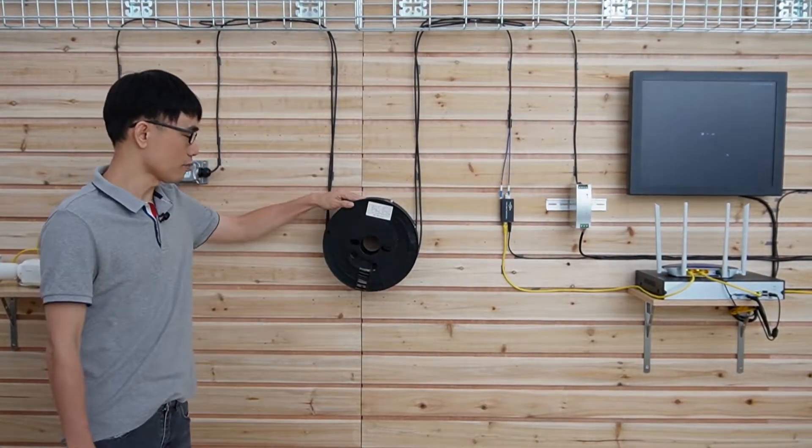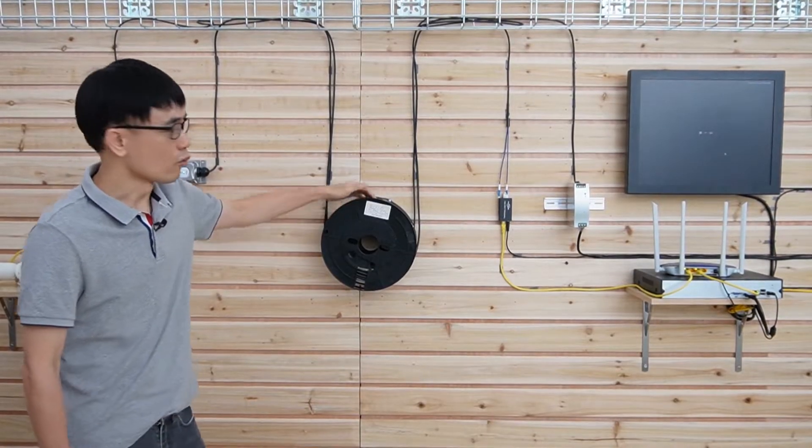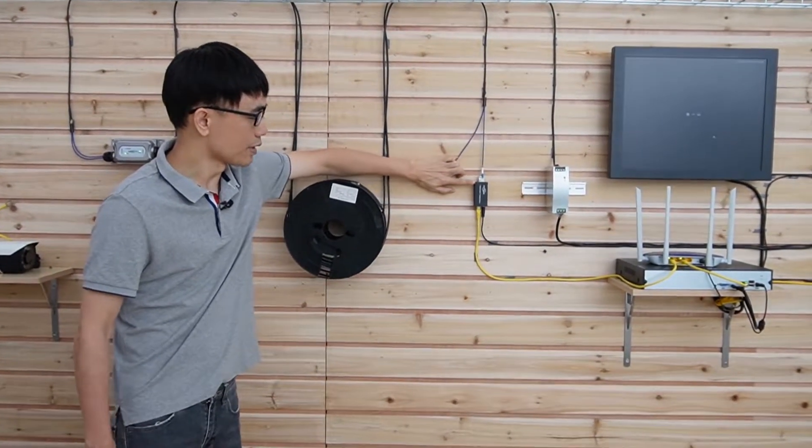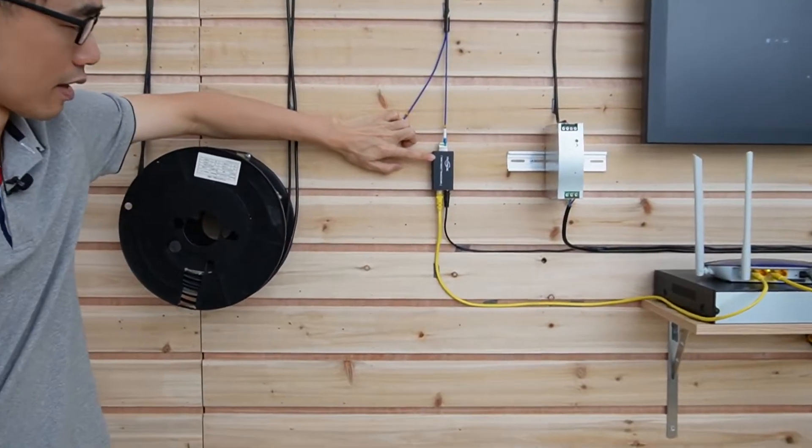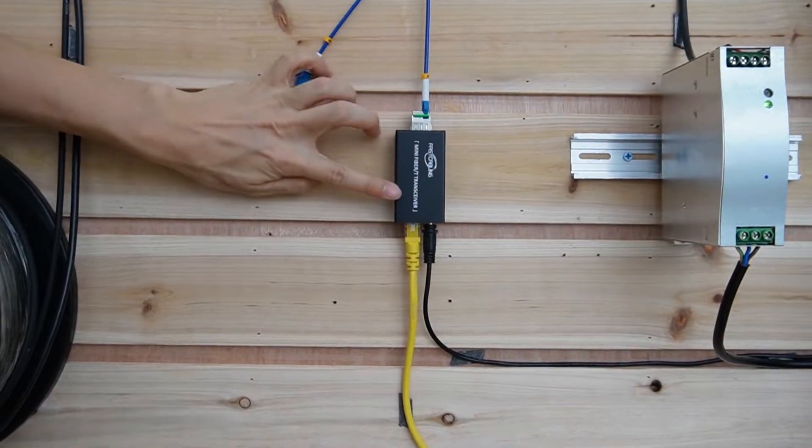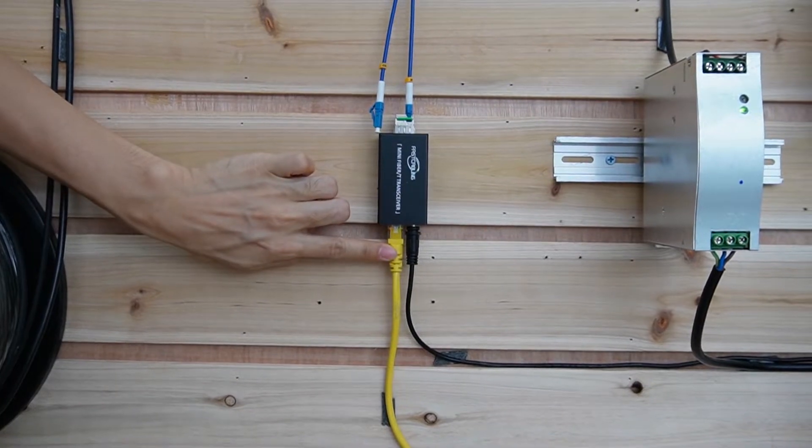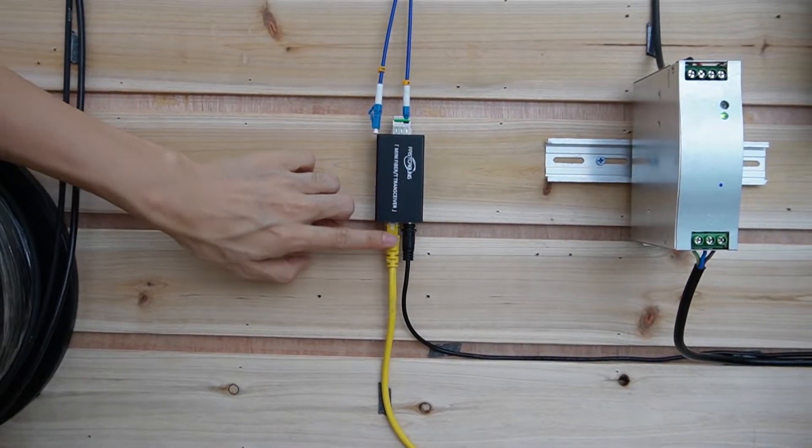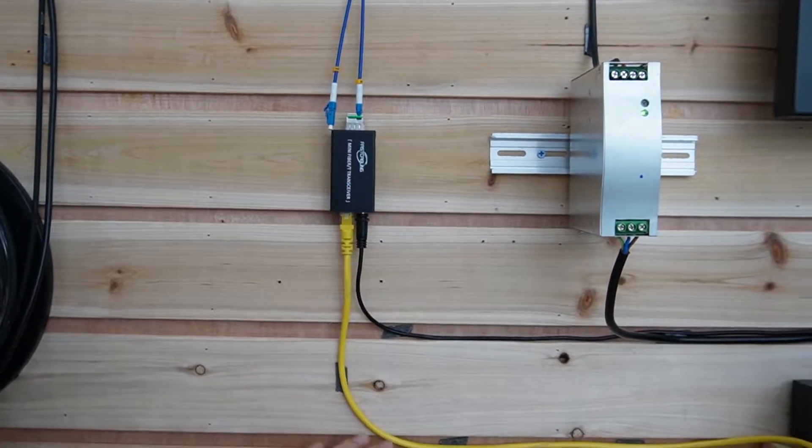This is the single-mode pre-made fiber optic cable, it's 300 feet. One end of the cable is connecting to this medial converter we just mentioned. The medial converter will convert the fiber optic signal to the electronic signal. Here you can see the Cat5e Ethernet output and the Cat5e is connecting to the router.